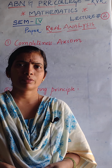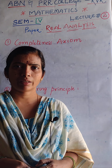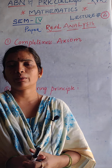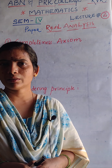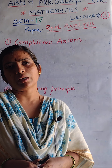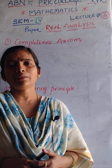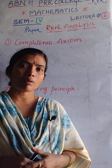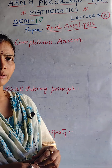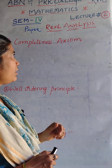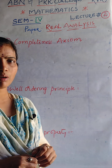Good morning students, welcome to KBN and PRR College online classes. In the last class we discussed about the syllabus of semester 4, that is about real analysis and basic properties of real numbers. According to set, we discussed about the boundedness of a set. In this class we will know about what is completeness axiom, well-ordering principle, and dense properties of sets.